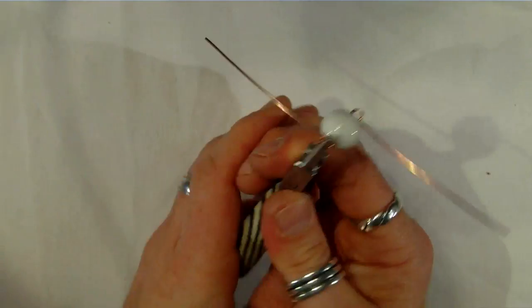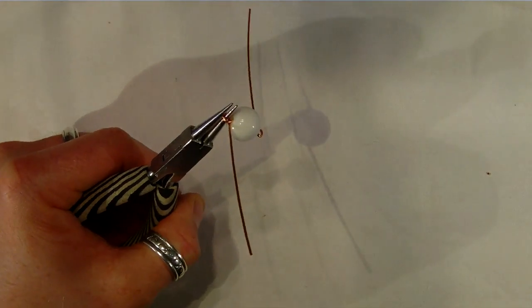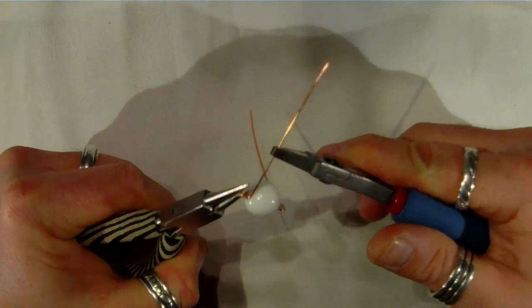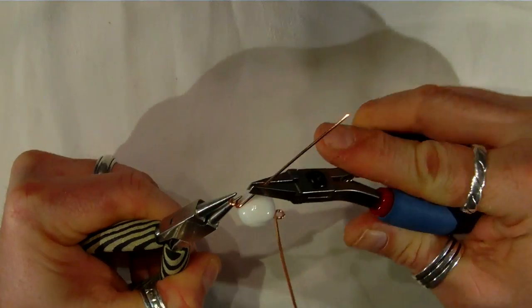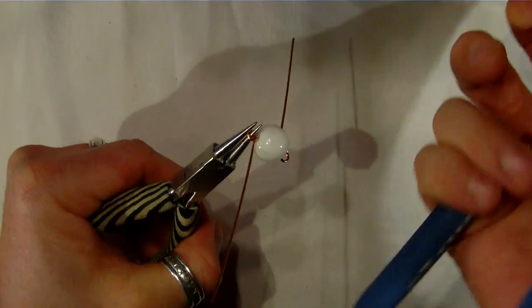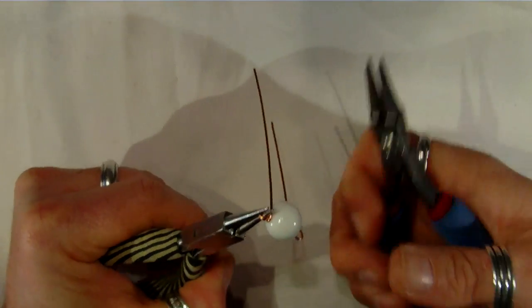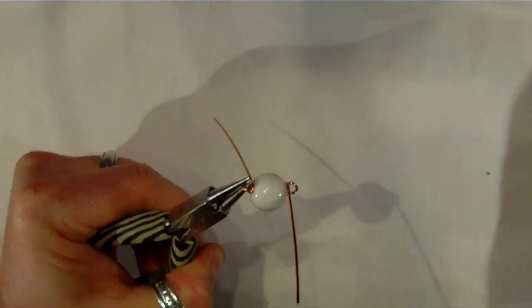Place it back onto your round nose pliers and start wrapping around, but just wrap around once. Do the same again on the other side. Stop there.